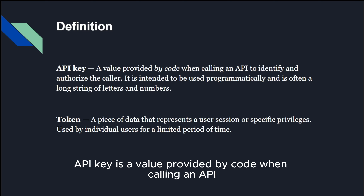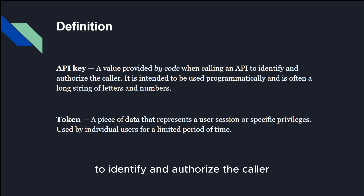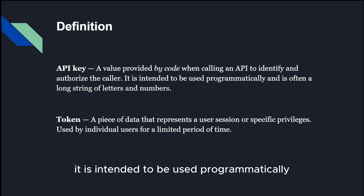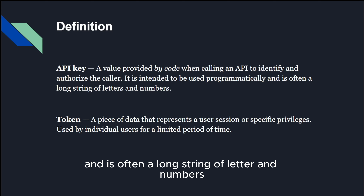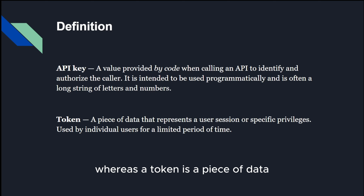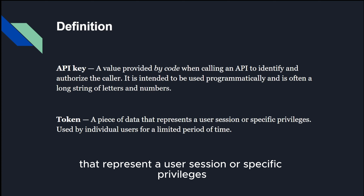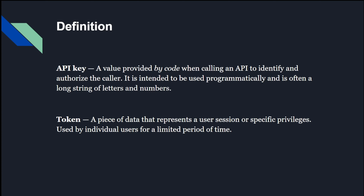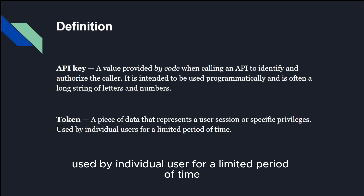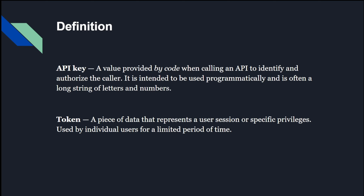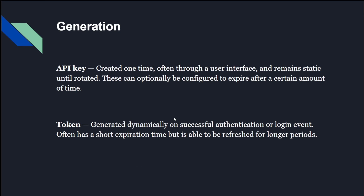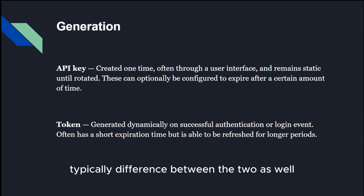An API key is a value provided by code when calling an API to identify and authorize the caller. It is intended to be used programmatically and is often a long string of letters and numbers. A token is a piece of data that represents a user session or specific privileges used by individual users for a limited period of time. The method of creating them is typically different between the two as well.